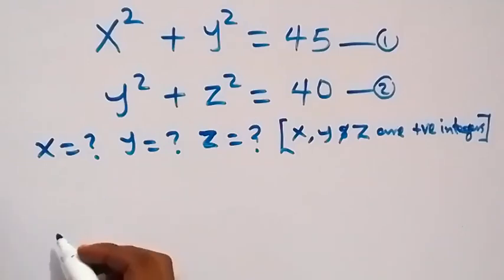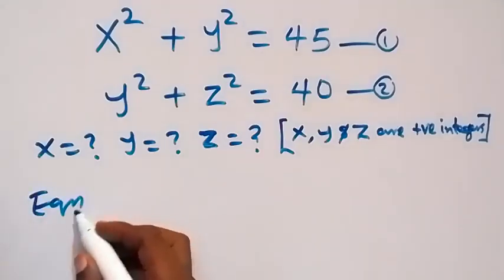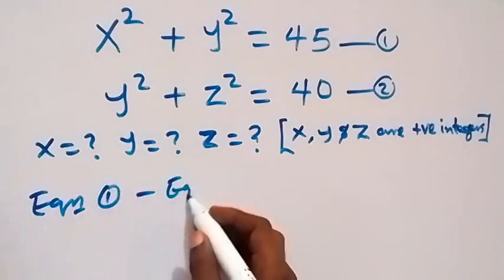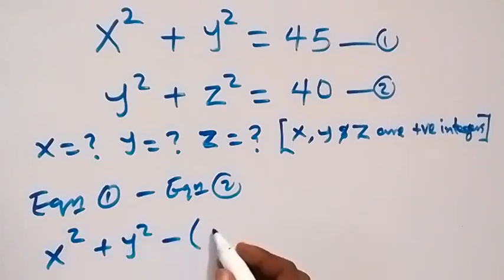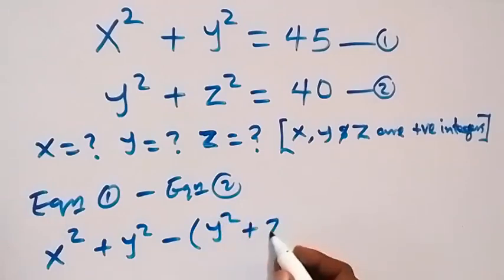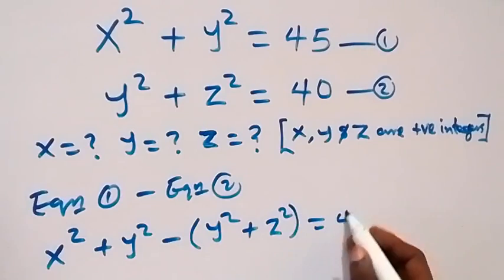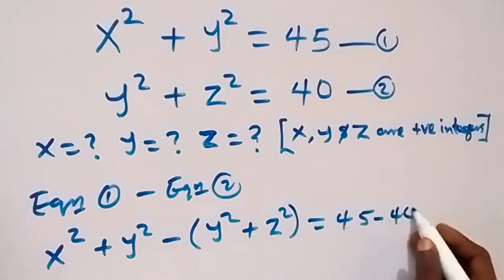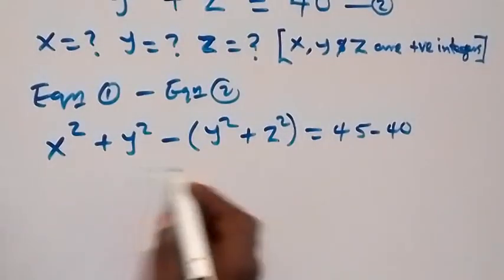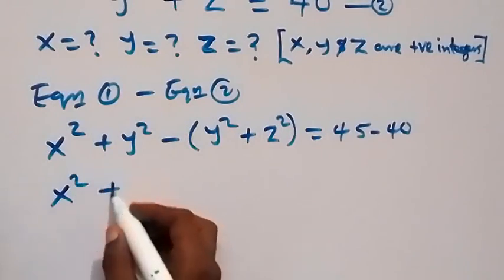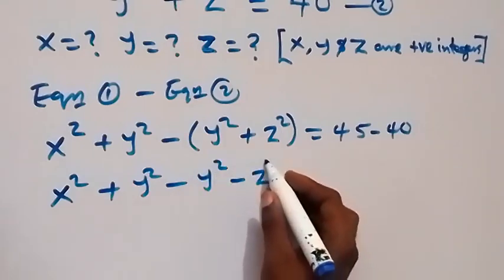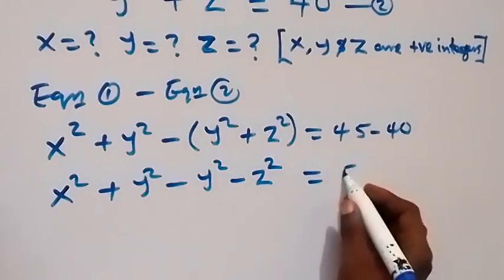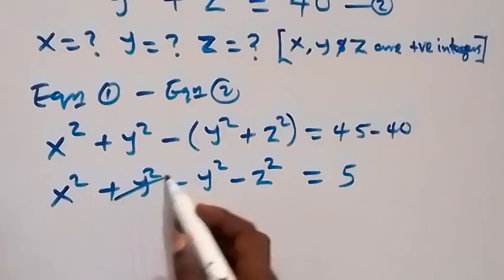From here, let's subtract equation 2 from equation 1. So equation 1 minus equation 2 gives us x squared plus y squared, minus (y squared plus z squared), equals 45 minus 40. When we open this bracket with the minus sign, this gives us x squared plus y squared, minus y squared, minus z squared equals 5.